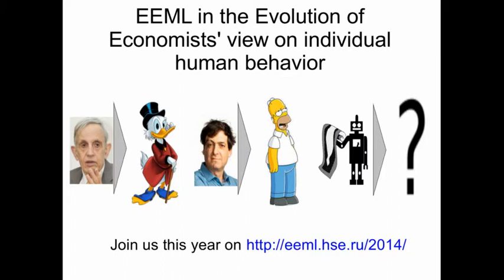After the birth of experimental economics as a discipline, the image of humans in economics shifted from Homo economicus — depicted as Scrooge McDuck — to a predictably irrational subject depicted as Homer Simpson.